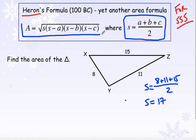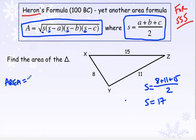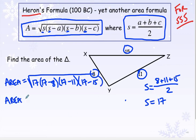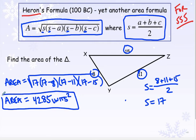Then you use your area formula. That value of S gets repeated multiple times, and then you subtract off each side length. So the area equals the square root of: S times (S minus 8) times (S minus 11) times (S minus 15). Type all that in your calculator and the area for this problem is 42.85 units squared. So this area formula is very nice when you have all three sides.